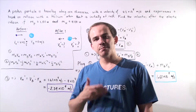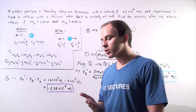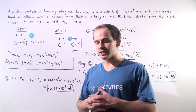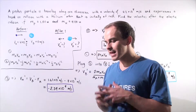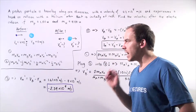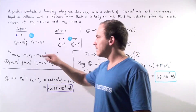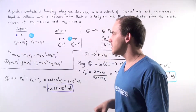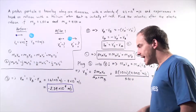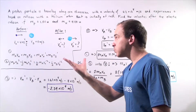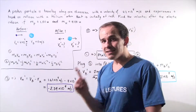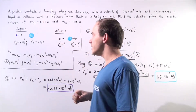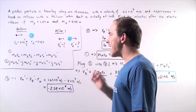Let's suppose that a proton particle is traveling along one dimension, along the x-axis, and it has an initial velocity given by Va equals 4 times 10 to the 4 meters per second. This proton collides elastically with a stationary helium atom.